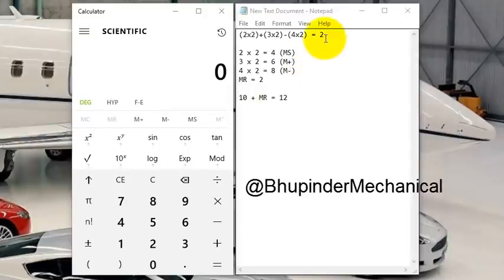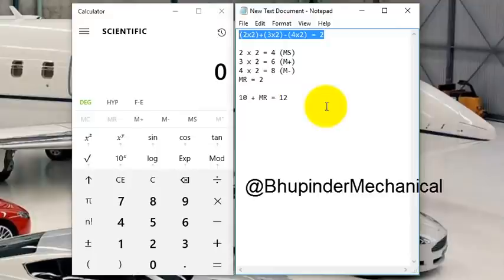For example, we got this equation: 2 times 2 plus 3 times 2 minus 4 times 2, which we know should be equal to 2. Now I'm going to show you how to do it using these memory functions: MS, M+, M-, and MR to get the final result.